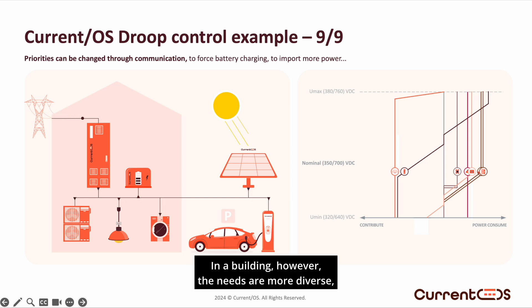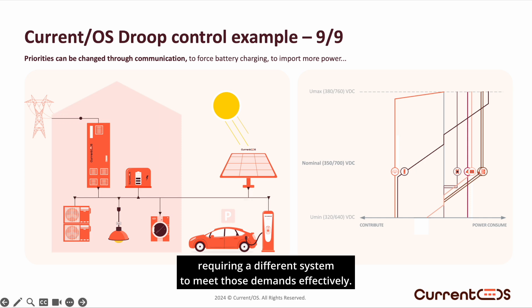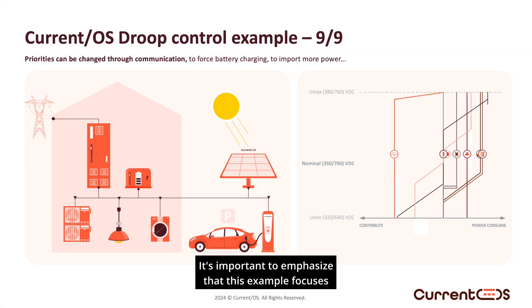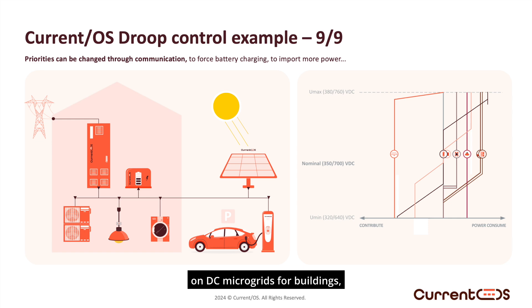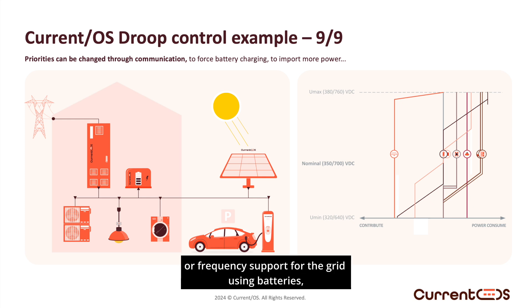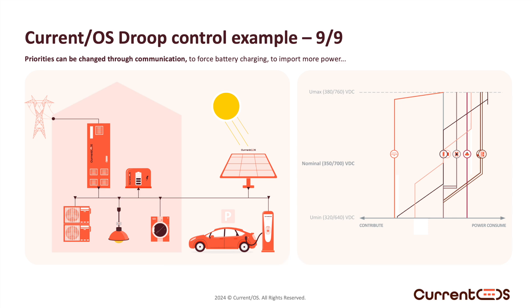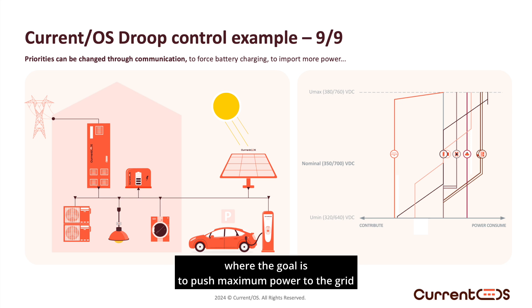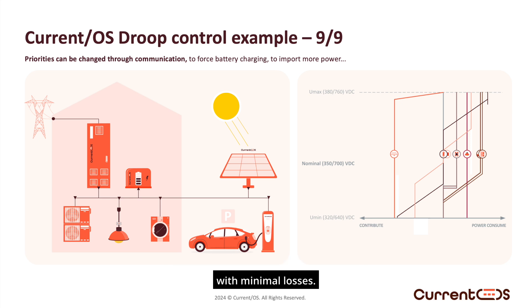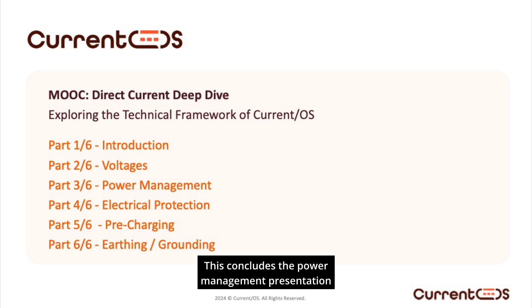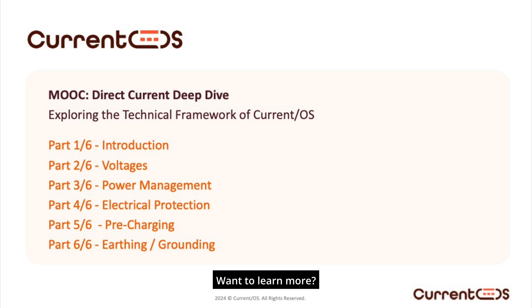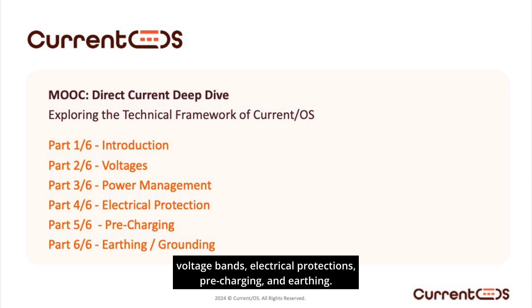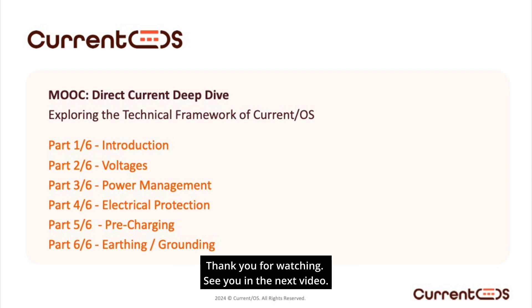In a building, however, the needs are more diverse, requiring a different system to meet those demands effectively. It's important to emphasize that this example focuses on DC microgrids for buildings, not photovoltaic farms or frequency support for the grid using batteries, which are entirely different applications. Current OS principles are not relevant for applications like a photovoltaic farm, where the goal is to push maximum power to the grid with minimal losses. This concludes the power management presentation of Current OS. Check out the other five Current OS MOOC videos covering an introduction to Current OS, voltage bands, electrical protections, pre-charging, and earthing. Thank you for watching.